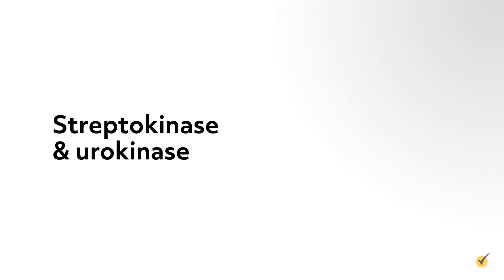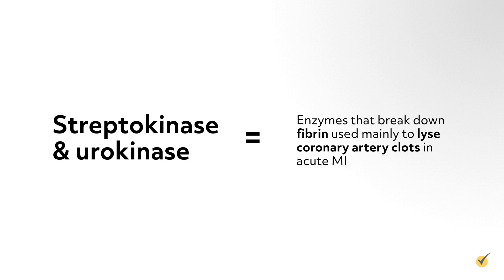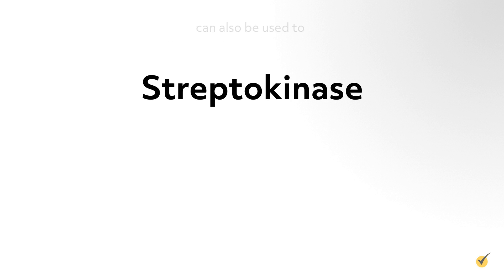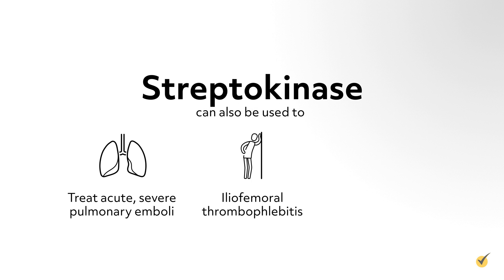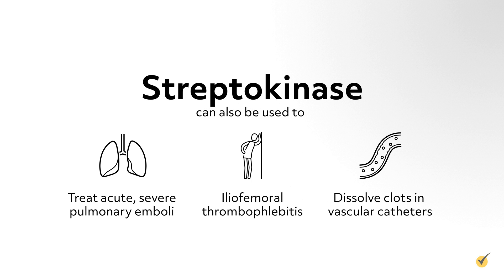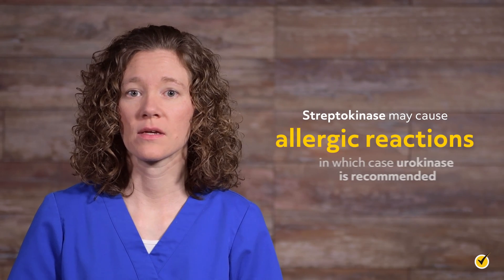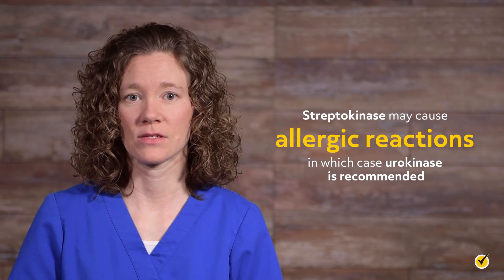Streptokinase and urokinase are enzymes that break down fibrin, used mainly to lyse coronary artery clots in acute MI. Streptokinase can also be used to treat acute severe pulmonary emboli or iliofemoral thrombophlebitis, and to dissolve clots in vascular catheters. Streptokinase may cause allergic reactions, in which case urokinase is recommended.